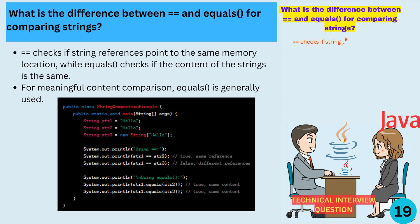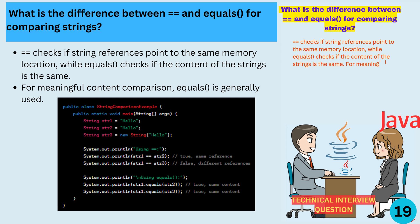What is the difference between == and equals for comparing strings? == checks if string references point to the same memory location, while equals checks if the content of the strings is the same. For meaningful content comparison, equals is generally used.